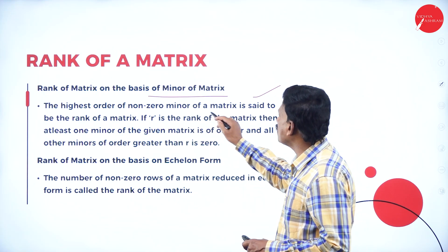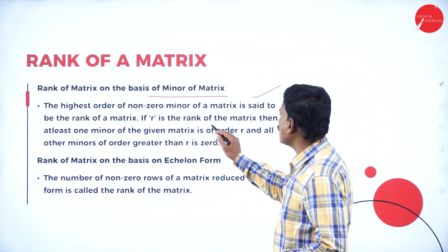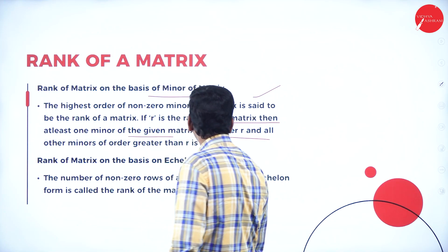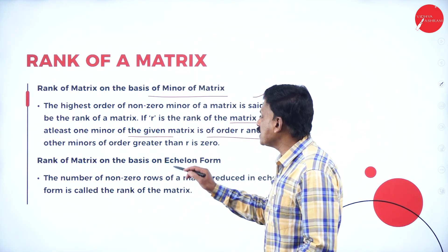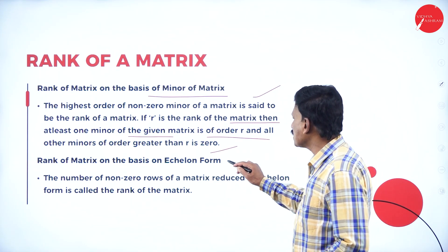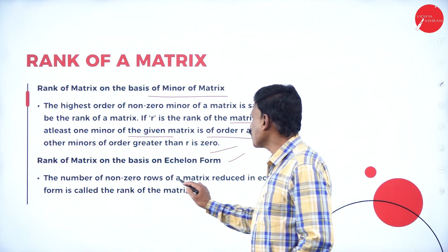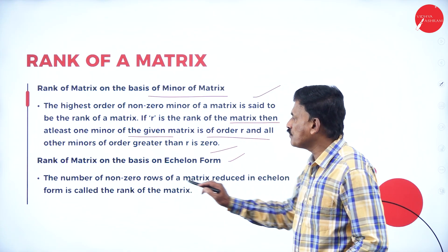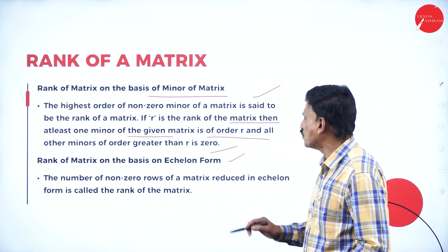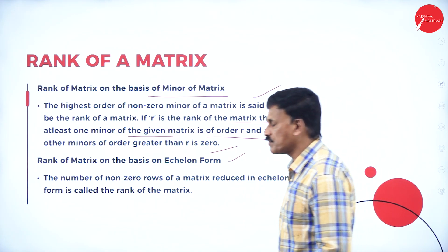The highest order non-zero minor of a matrix is said to be the rank of the matrix. If r is the rank of the matrix, then at least one minor of order r is not zero, and all minors of order greater than r are zero. The rank of a matrix can also be defined on the basis of echelon form: the number of non-zero rows of a matrix reduced to echelon form is called the rank of the matrix.